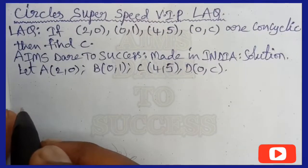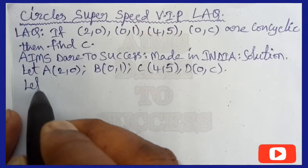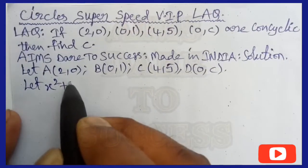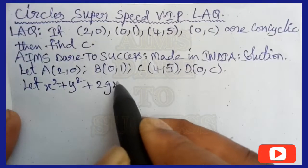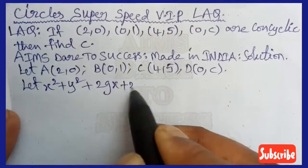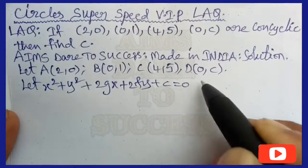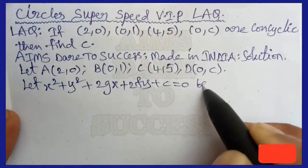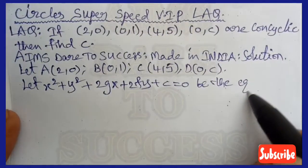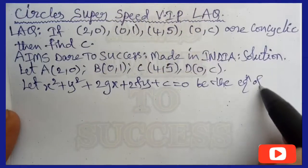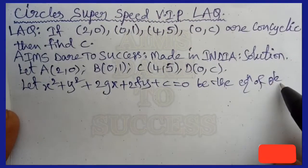Let A = (2,0), B = (0,1), C = (4,5), D = (0,c). Let's start our journey. Let x² + y² + 2gx + 2fy + c = 0 be the equation of the circle — the standard equation of the circle.